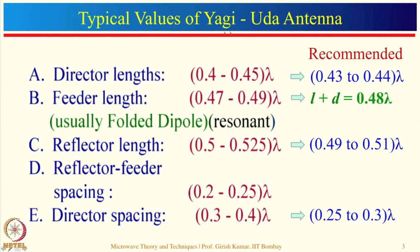Typical dimensions for Yagi-Uda antenna elements: for the feeder length, books recommend 0.47 to 0.49 lambda, but I recommend L + D = 0.48 lambda, where D is the diameter and L is the length of the dipole. For example, if D = 0.01 lambda, then L = 0.47 lambda; if D = 0.02 lambda, then L = 0.46 lambda.